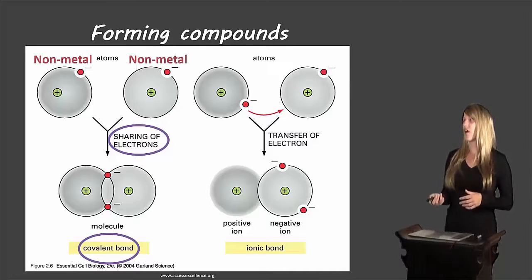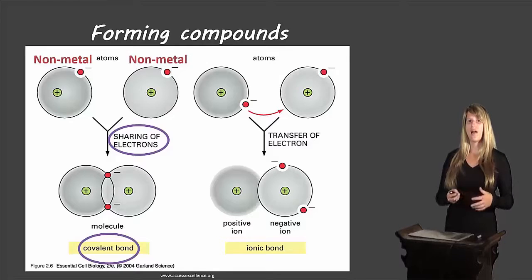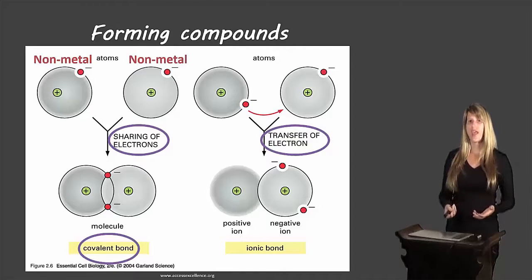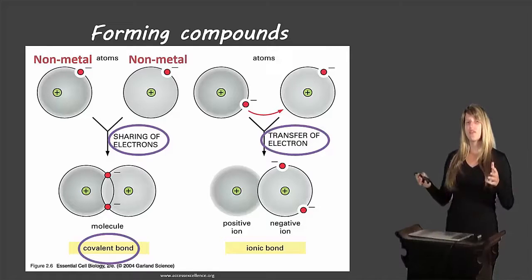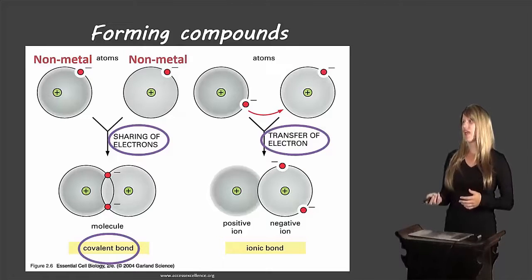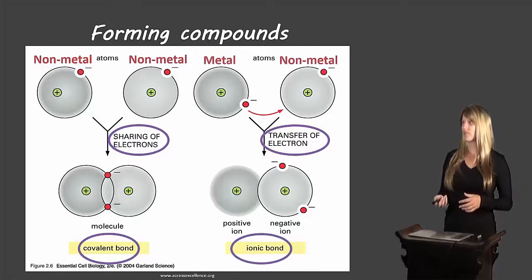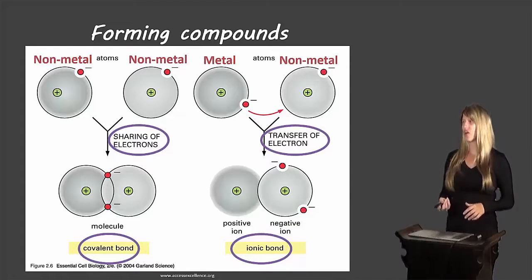On the other hand, we have ionic bonds, and this happens between metals and non-metals. Ionic bonds are characterized by the transfer of electrons — electrons are transferred from one atom to the other, forming ions that are then attracted to each other. One has a positive charge, one has a negative charge, and positives and negatives attract. It is the metal that ends up losing the electron to the non-metal, which ends up gaining an electron.